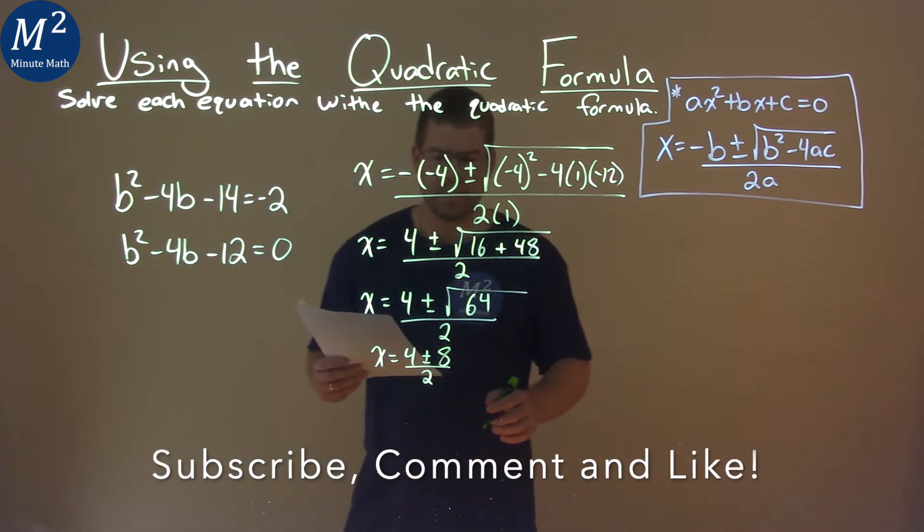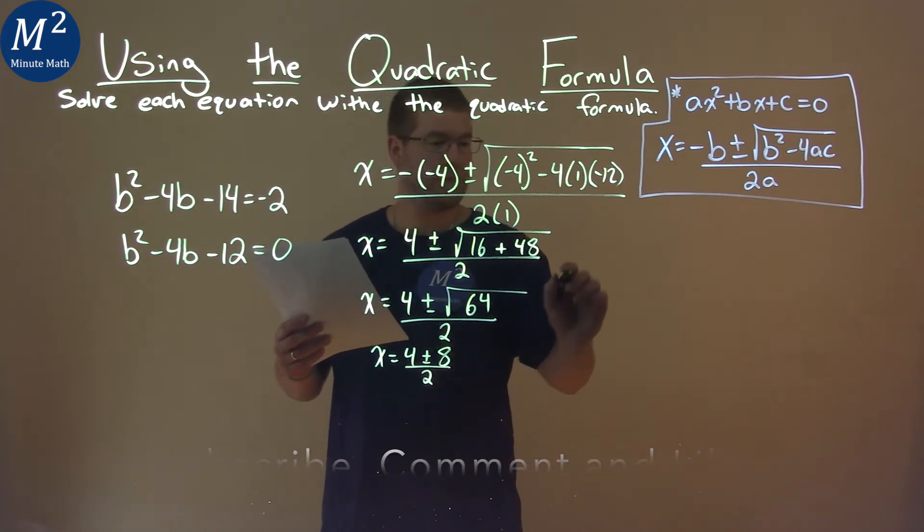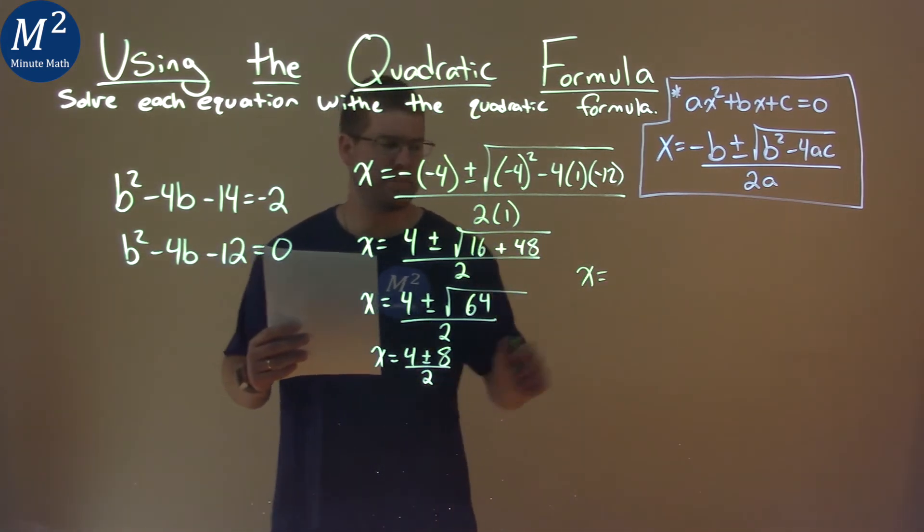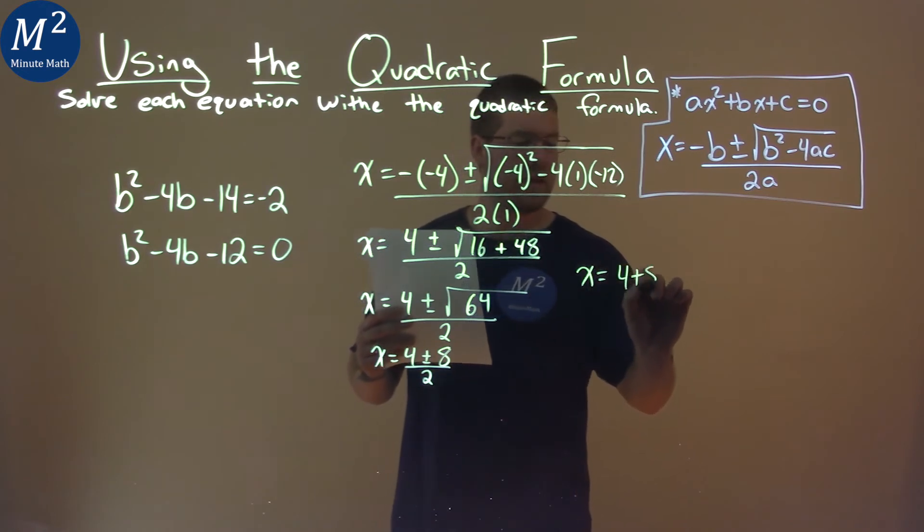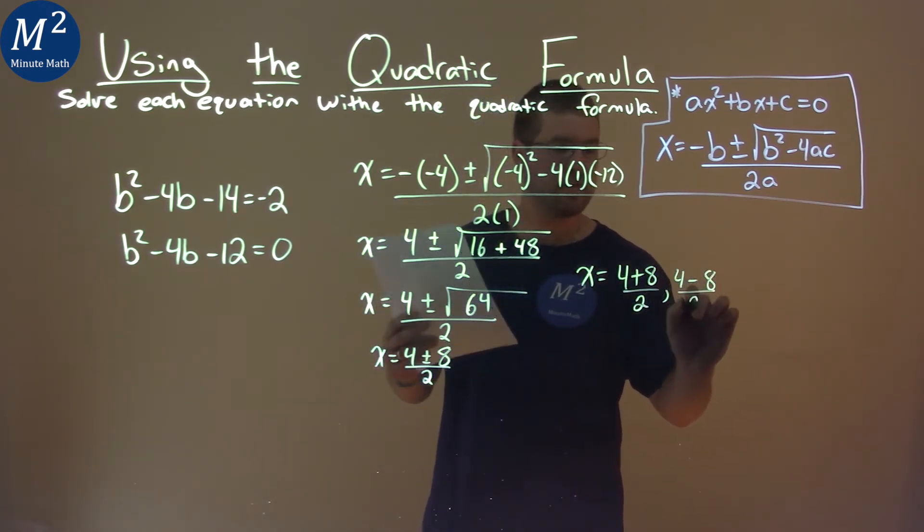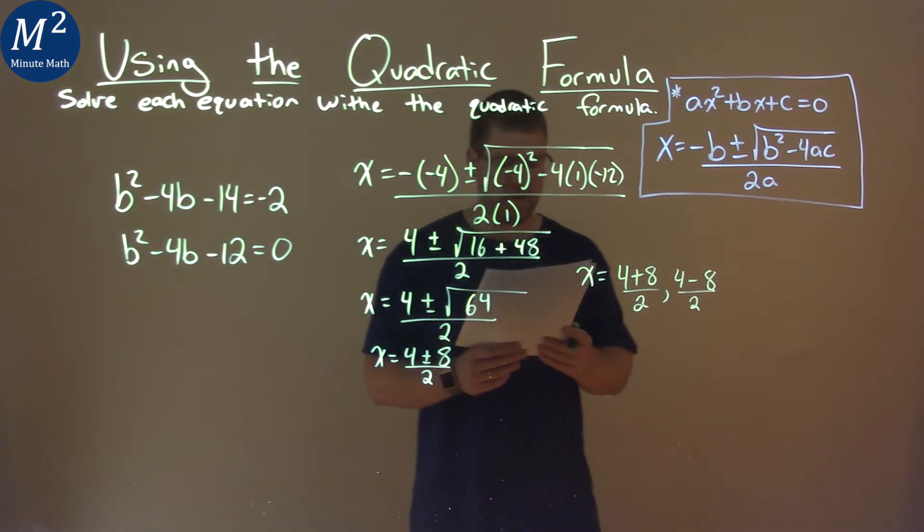At this point I like to break this apart into both parts here. It kind of doesn't really make sense, the plus and the minus. So we have 4 plus 8 over 2 and 4 minus 8 over 2, and we're going to solve each one of these individually.